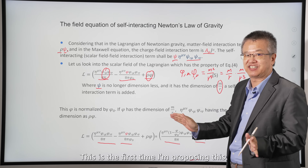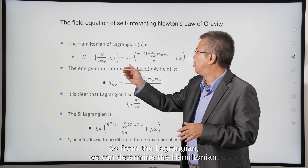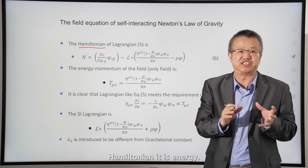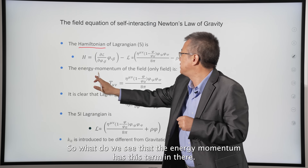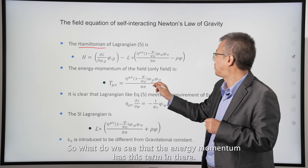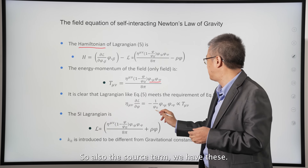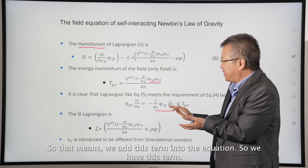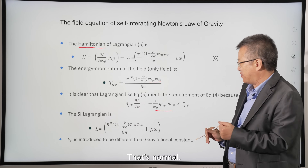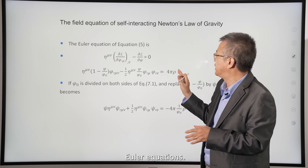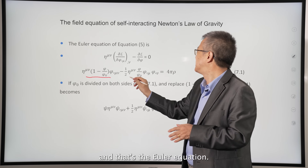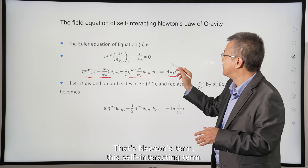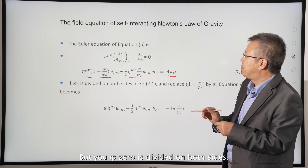From the Lagrangian we can determine the Hamiltonian, which is the energy. The energy-momentum has the field-field term in it, along with the source term. Adding this term into the equation, we derive the Euler equations. We have the flux term, Newton's source term, and the self-interacting term.